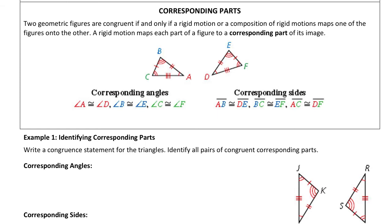When I talk about corresponding parts, I am actually talking about angles that correspond and sides that correspond. In this first diagram I show you, A corresponds to D, they're the same measure. B corresponds to E, they're the same measure. C corresponds to F, they're the same measure.